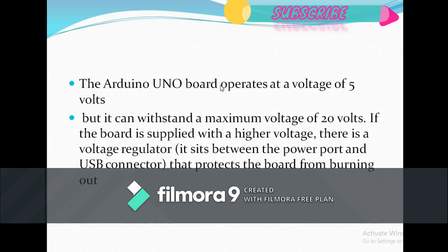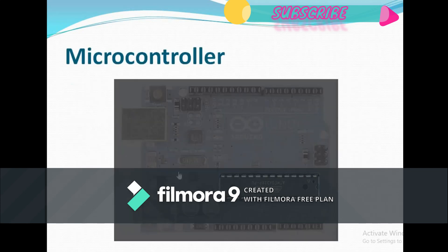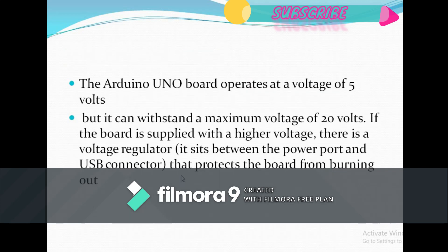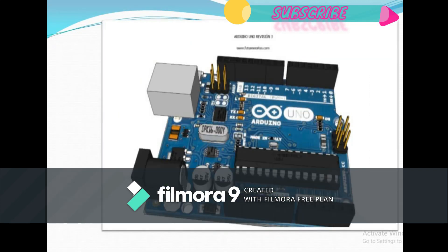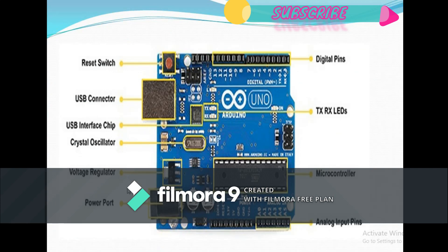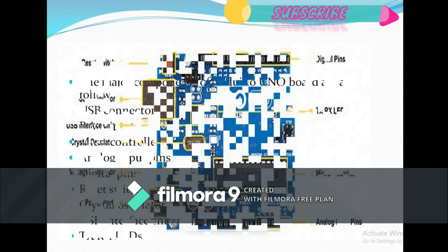Our Arduino board only operates at 5 volts. If we provide a higher voltage, the voltage regulator — shown here — protects the board from burning out by supplying only the required voltage to the board.